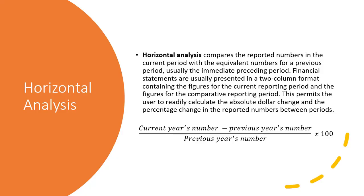Let's start off with horizontal analysis. This is particularly about comparing the current period against the previous period, so there will be comparison of two-year statements. As we can see in most financial statements published on company websites, they will have a two-column format, making it easy for us to do comparison. The formula is the difference between the current year's number and the previous year's number, divided by the previous year's number.